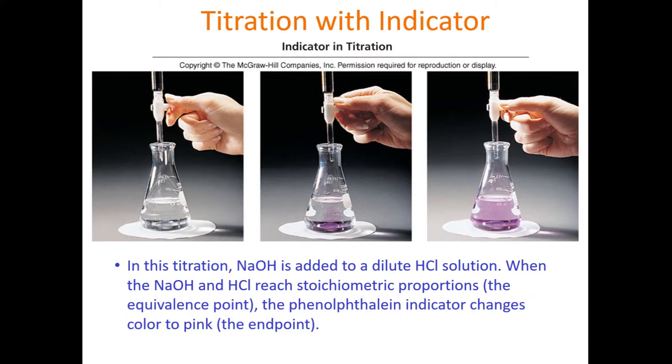Notice that in this experiment, they're using sodium hydroxide, and it's being added to a dilute HCl solution. When they reach stoichiometric proportions, in other words, near the equivalence point, the phenolphthalein indicator changes to pink, and we call that the endpoint. Again, very important that we catch this very, very early in the change of the indicator.